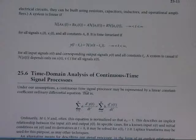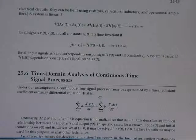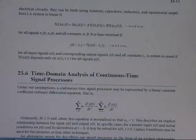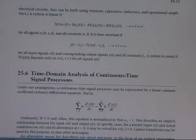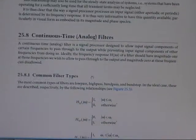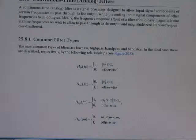This is the equation for the domain analysis of a continuous dynamic processor. This is for the continuous type analog data — this is the filter type.